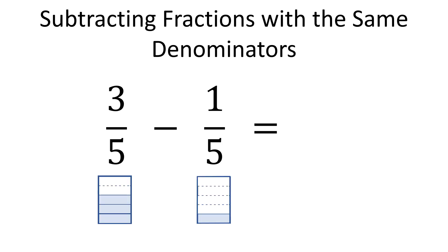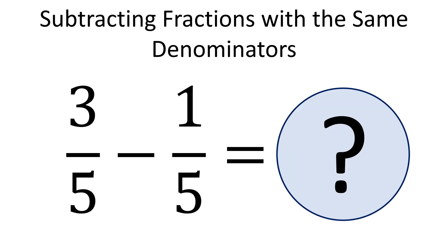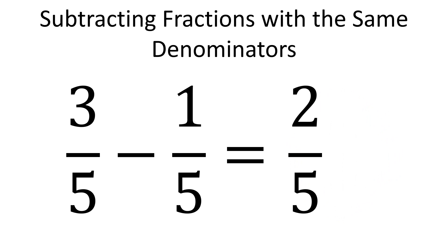As we have the same denominators, we only subtract numbers in the numerators. So we subtract from 3, 1. And that leaves us with 2 parts out of a total of 5 equal parts. So 3 fifths minus 1 fifth is 2 fifths.